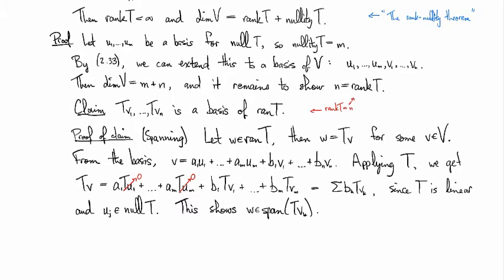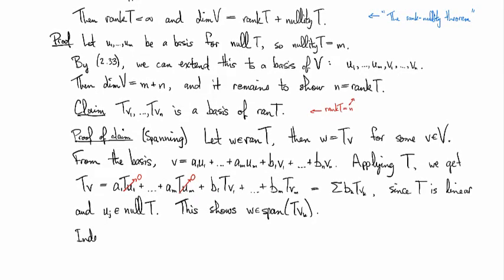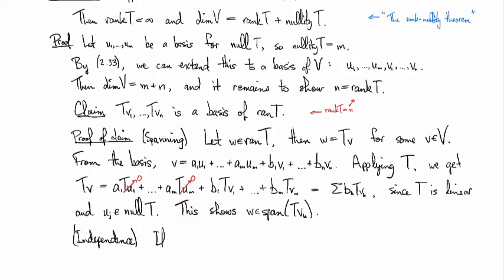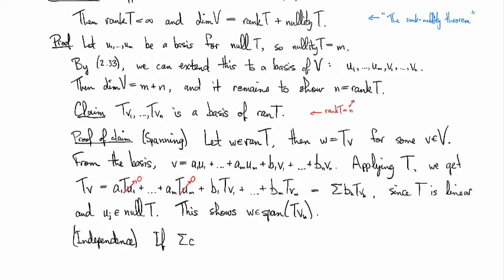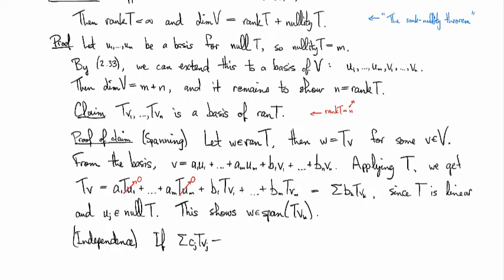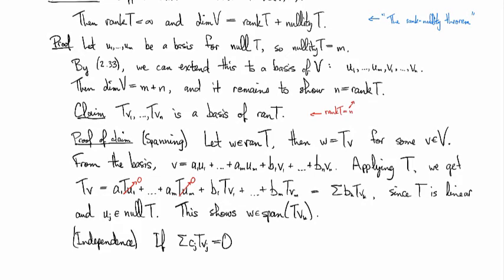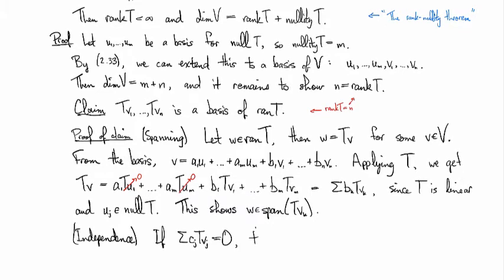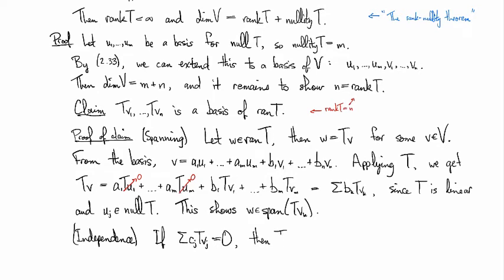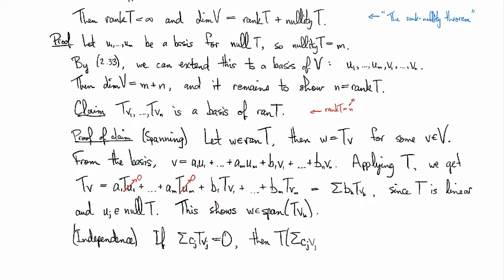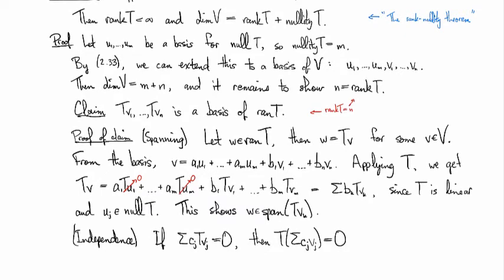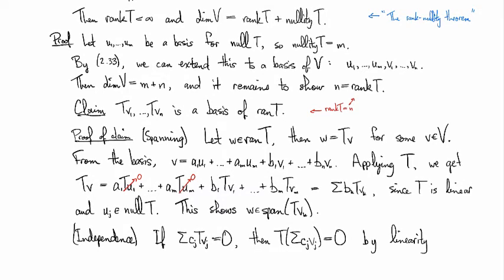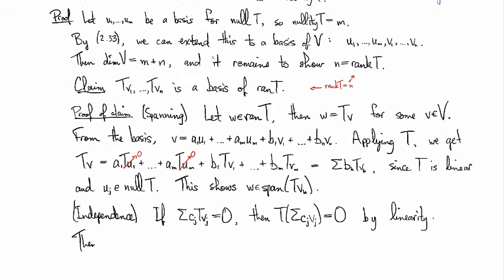Now in order to see that the Tvk's are linearly independent, we need a different argument. So suppose that we've got a sum of cjTvj adding up to zero. Then the goal is to show that all the cj's are equal to zero. Then we have T of this sum by linearity, that is also going to be equal to zero.